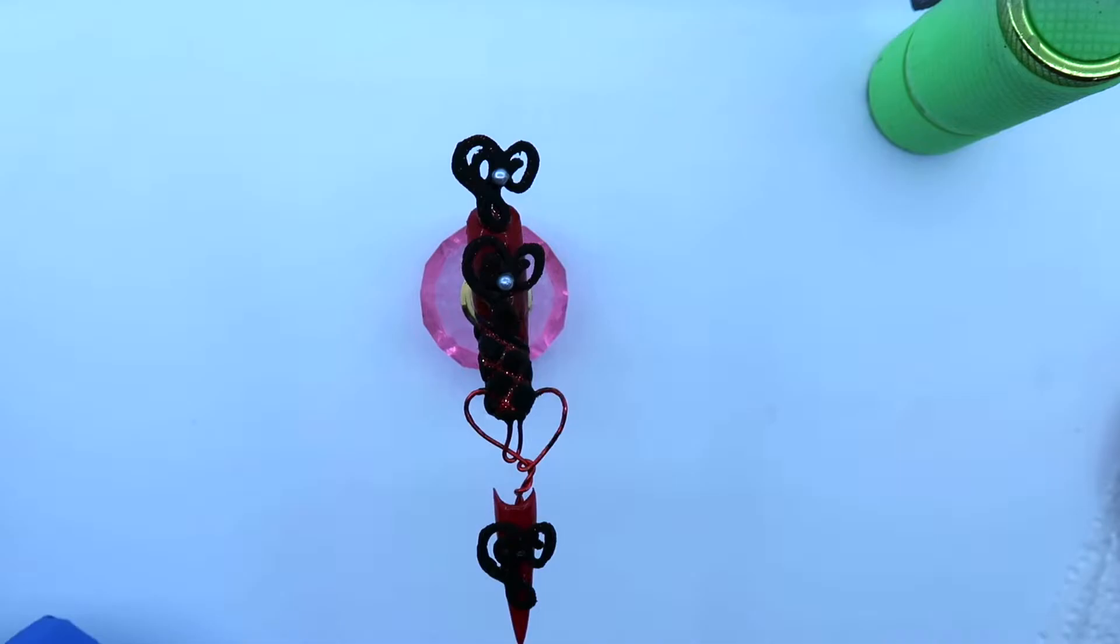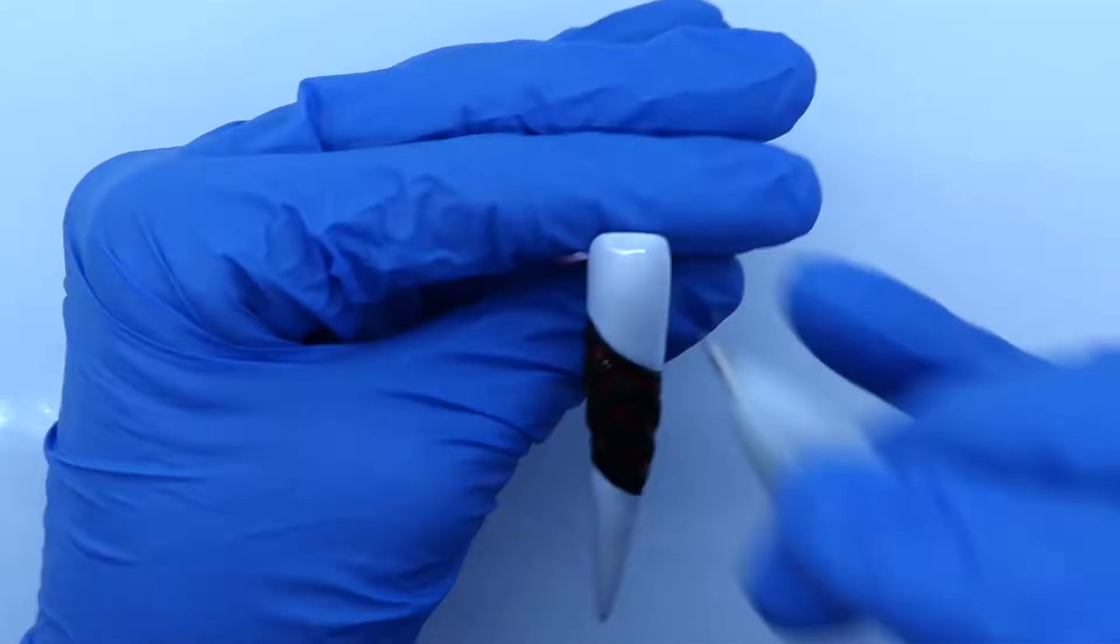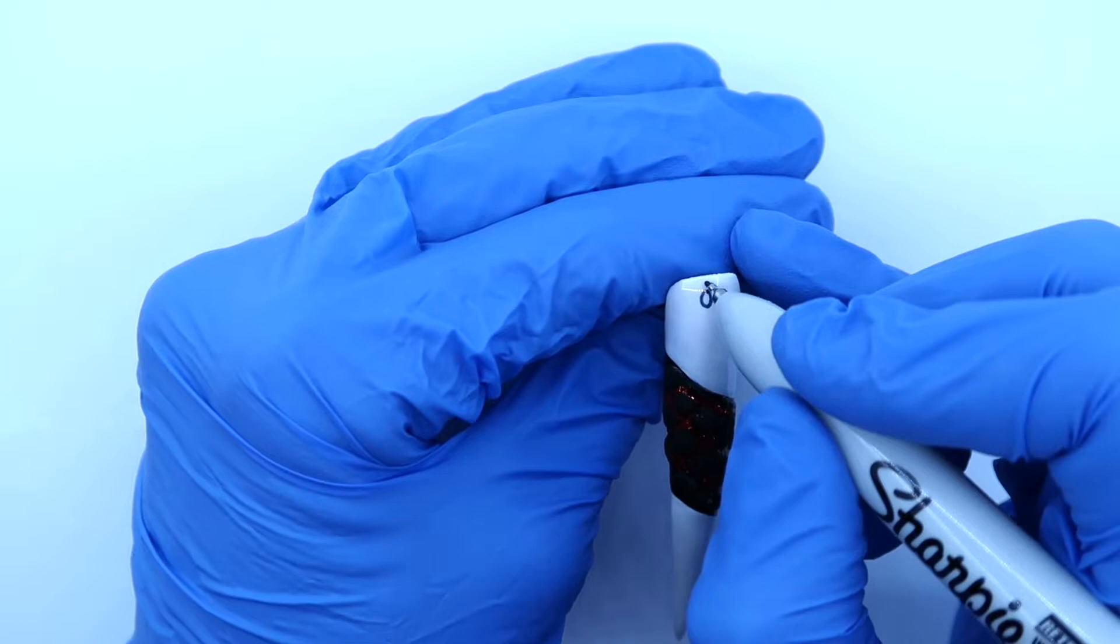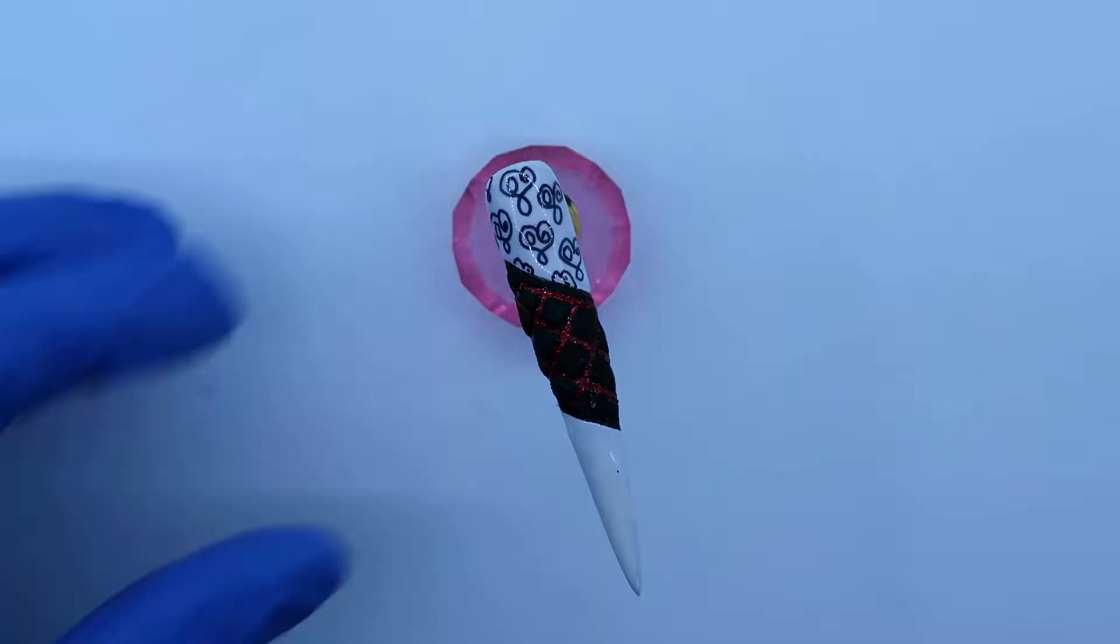You can add some pearls to further accentuate the vintage vibe. For teeny tiny monogram print, I use the Fine Point Sharpie, then reinforce with gel paint. You can't remove Sharpie, so you have to be very careful.